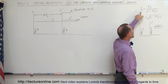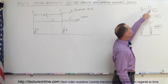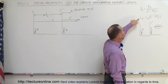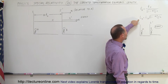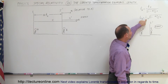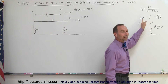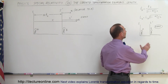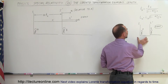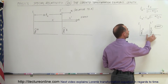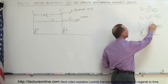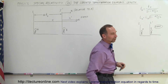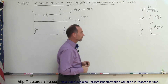From previous videos, we found that the time between A and B is related by one equation, and the length as measured by A versus the length as measured by B is related by another equation. A is in the stationary reference frame, B is in the moving reference frame, and the event is happening in the moving reference frame.